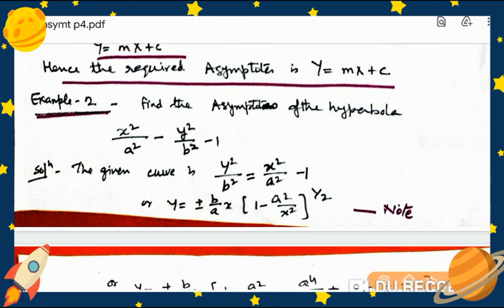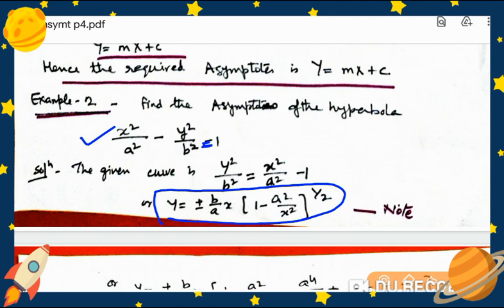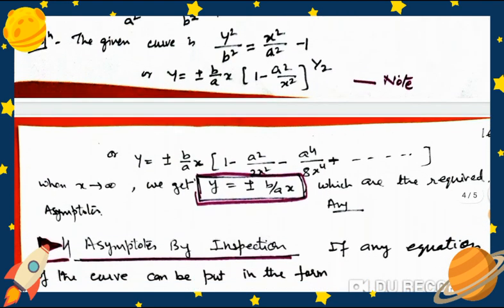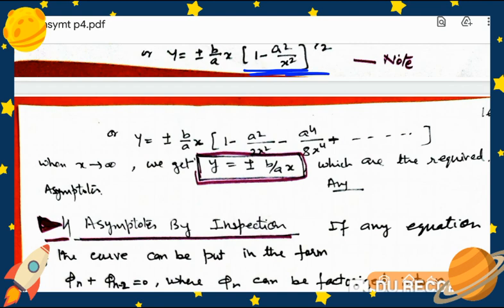Consider: find the asymptotes of the hyperbola x²/a² − y²/b² = 1. Simplifying the equation into standard form: y = ± (b/a)x · (1 − a²/x²)^(1/2). Expanding (1 − a²/x²)^(1/2) = 1 − a²/(2x²) − a⁴/(8x⁴) − .... As x tends to infinity, y = ± (b/a)x, which are the required asymptotes.